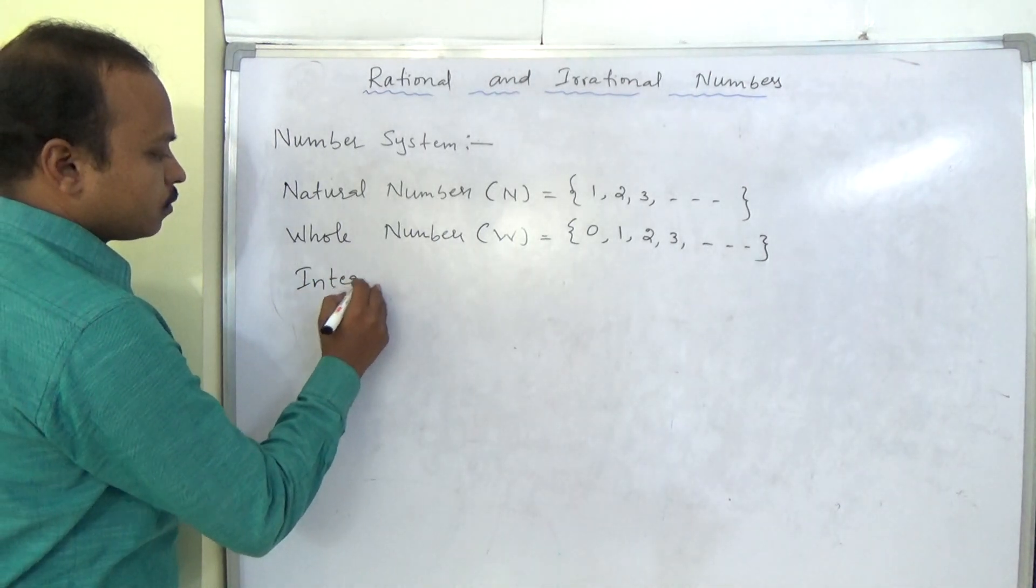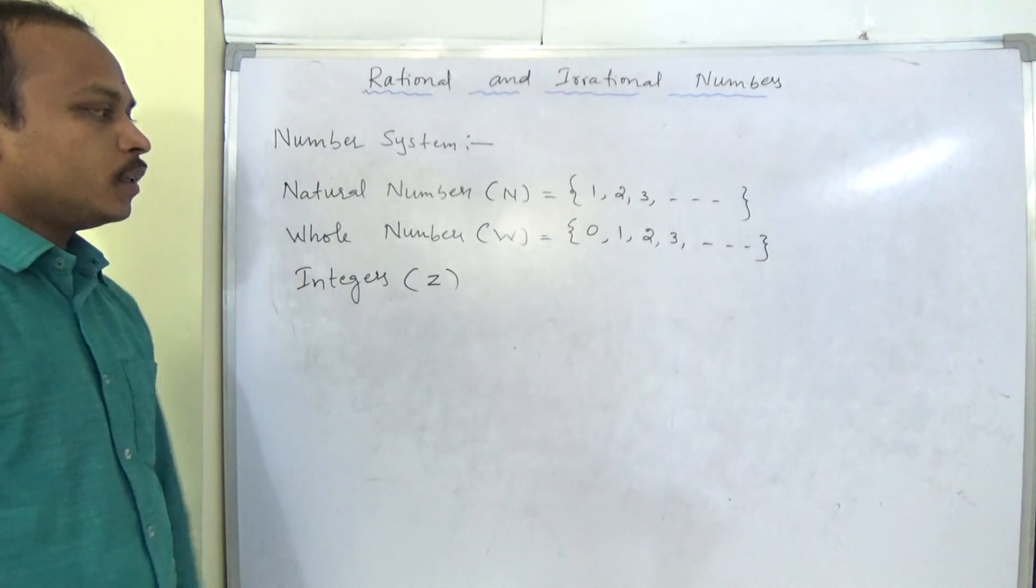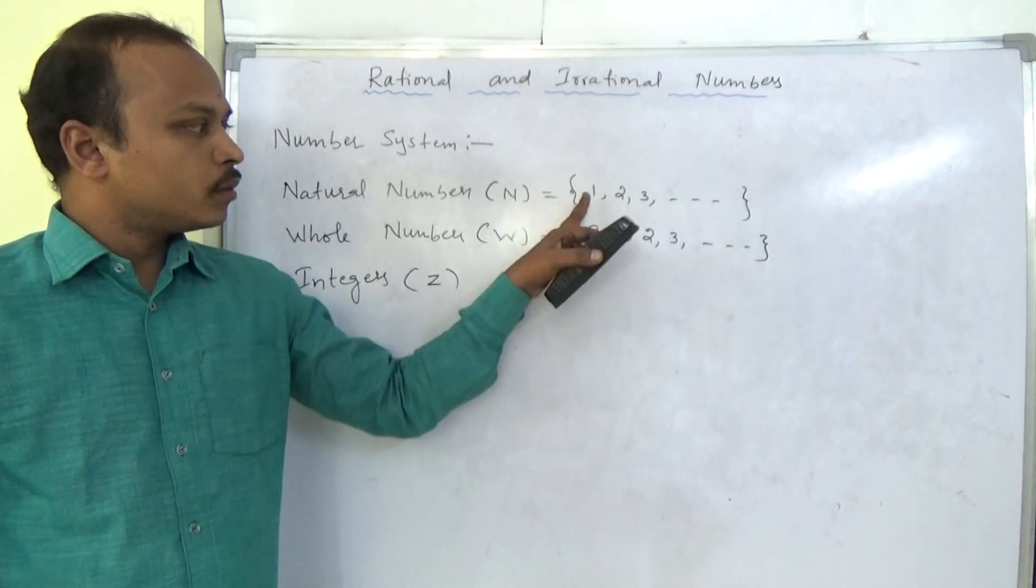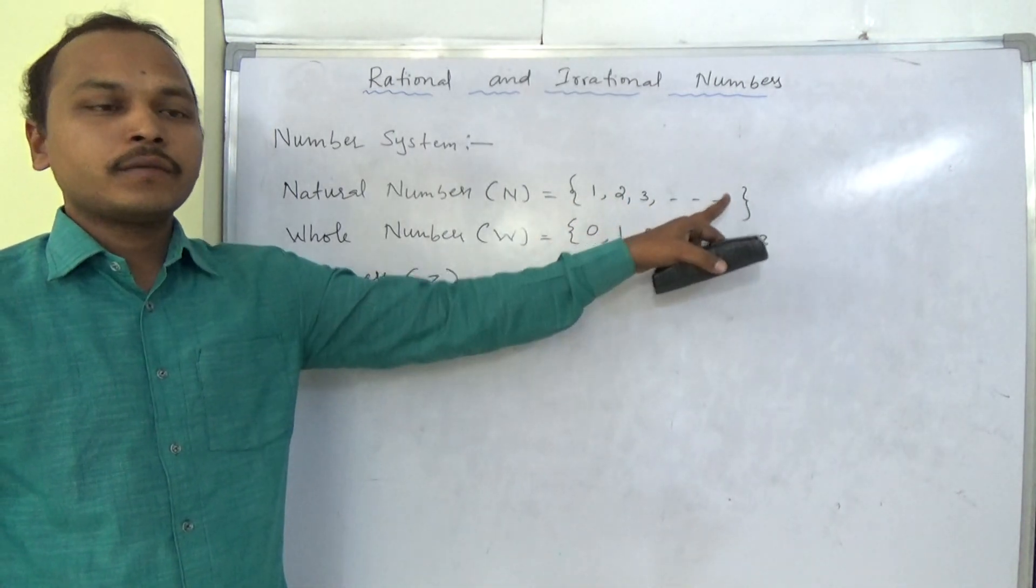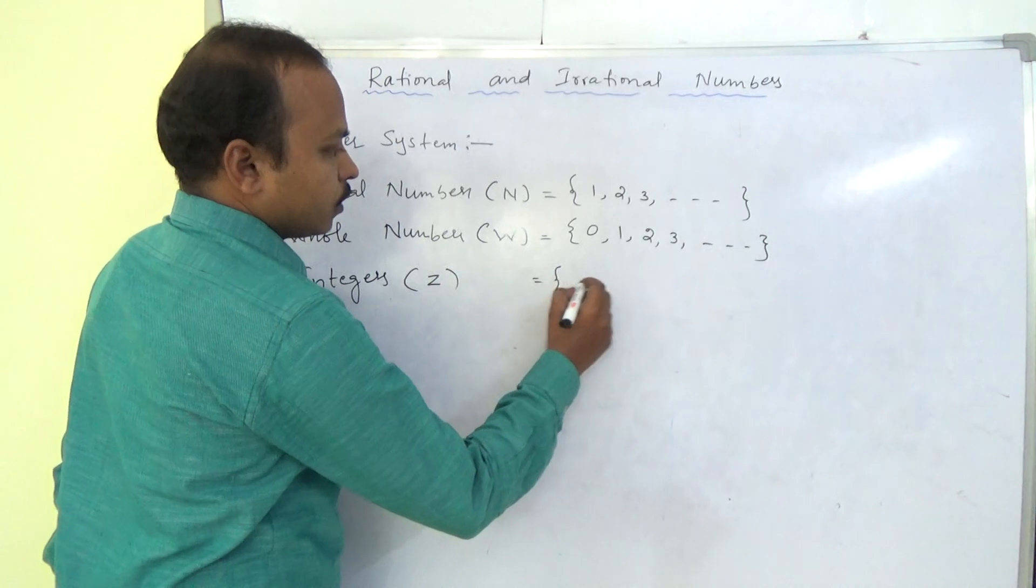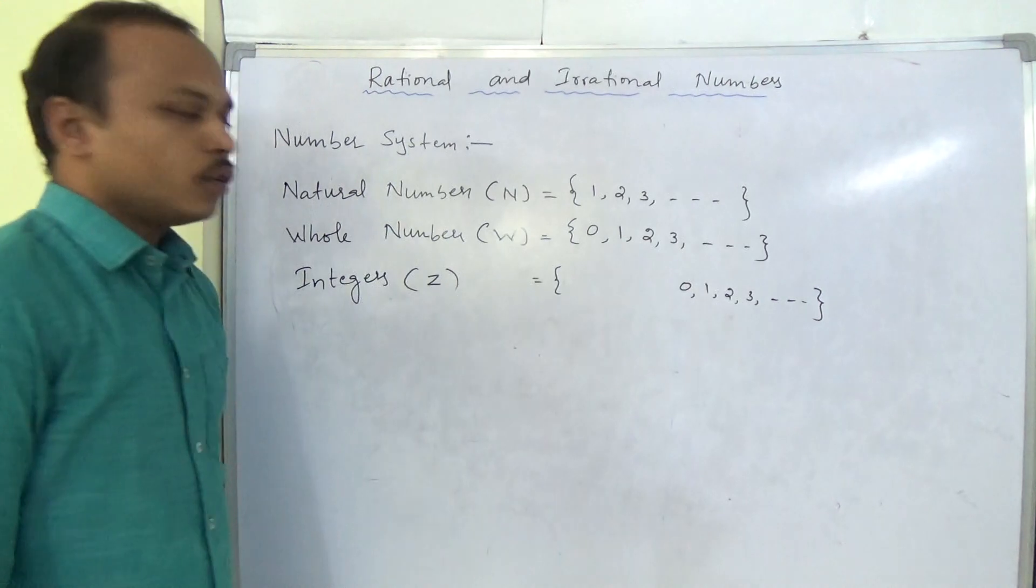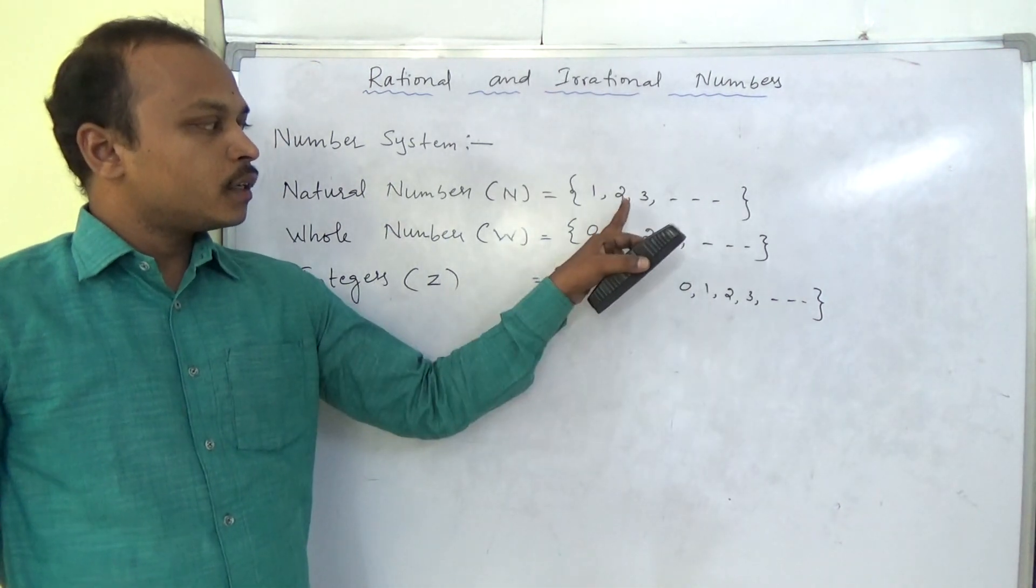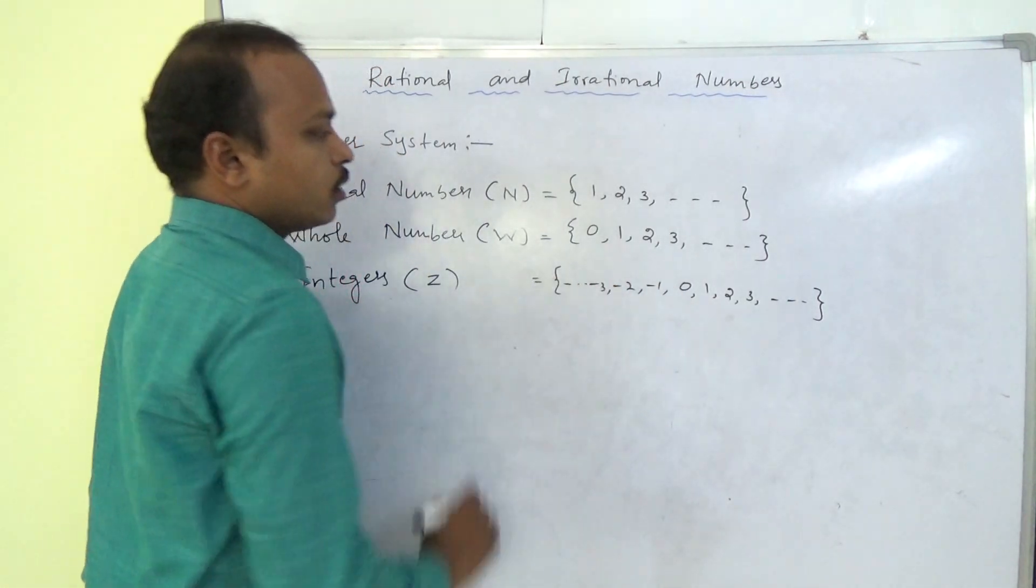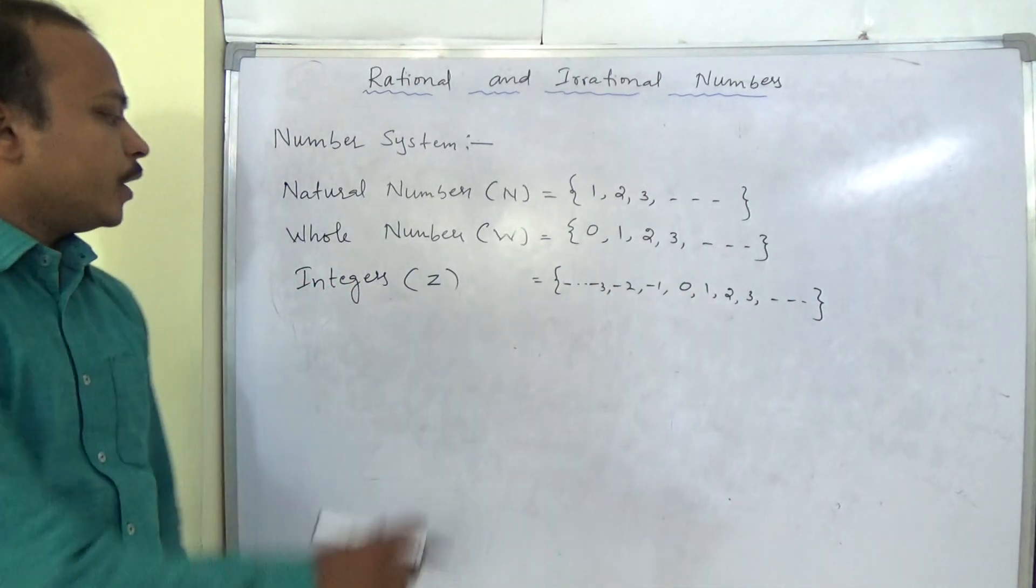The next number system is integers, we will denote with Z. In this, along with the whole numbers, negative naturals. Negative naturals means minus one, minus two, minus three, and so on, including zero, one, two, three. Will denote with Z. That is zero, one, two, three, and so on are whole numbers. Now along with this, negative natural numbers will be added. That are minus one, minus two, minus three till infinity. This is negative infinite, positive infinite. Will denote with Z.